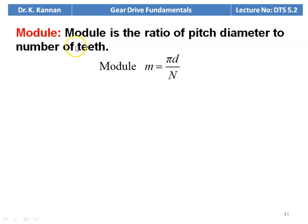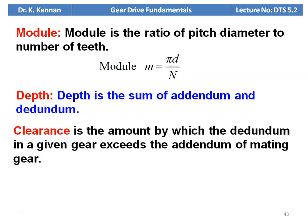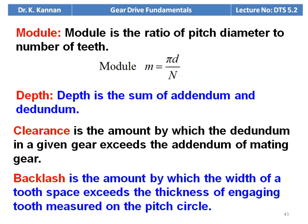We define the module, which is an important parameter. The module of two mating gears should be the same. Module is the ratio of pitch diameter to the number of teeth: module m = D / N, where N is the number of teeth. The whole depth is the sum of the addendum and the dedendum. Clearance is the amount by which the dedendum in a given gear exceeds the addendum of the mating gear. Backlash is the amount by which the width of the tooth space exceeds the thickness of the engaging tooth measured on the pitch circle.